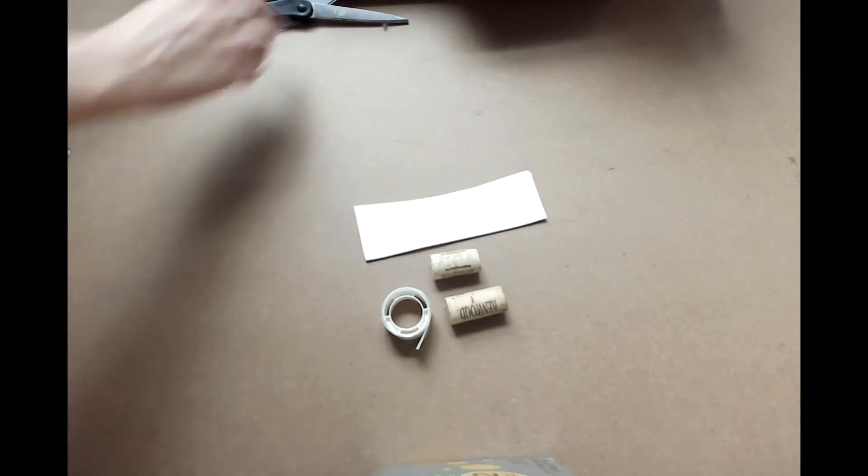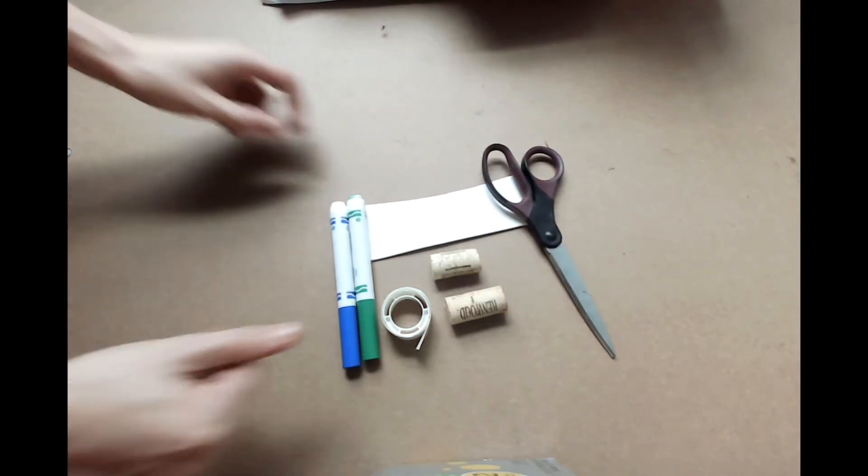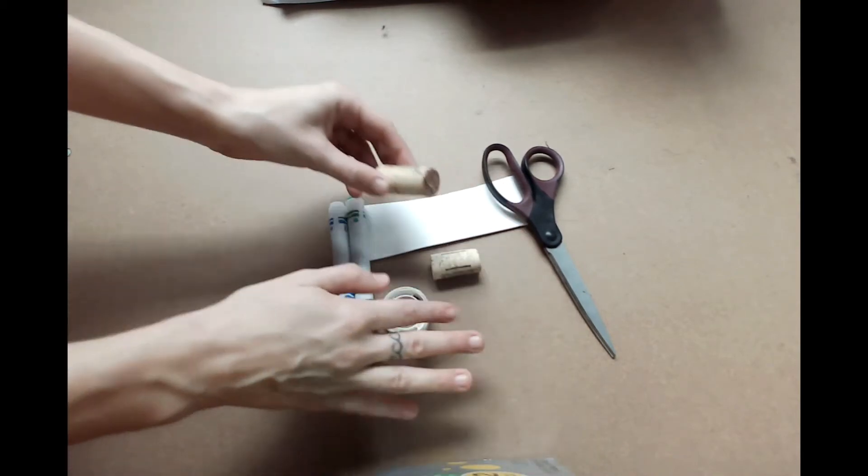For this project we're also going to need a pair of scissors and some markers. To make our cork stamp, we're going to be attaching foam shapes to the top of our cork using the glue dot.